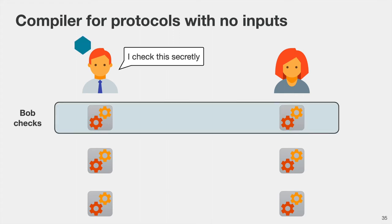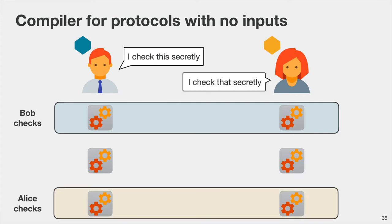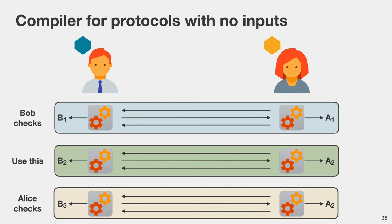To avoid this, instead of publicly revealing which execution is checked, each party checks some execution by itself — Bob randomly selects the first execution to check and Alice randomly selects the last, but neither knows which execution the other party checks. The important point is that if each party checks less than half of the executions, there is still at least one execution to produce the output. Each party uses oblivious transfer to secretly obtain the random tape for their chosen execution, then checks whether everything was consistent. Since Alice doesn't know which execution Bob checks, if she cheats in an execution Bob is checking, Bob obtains a certificate he can show to a third party.